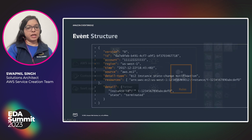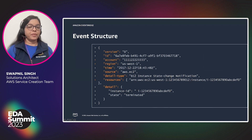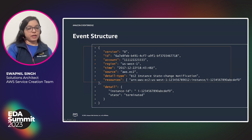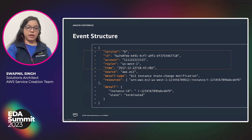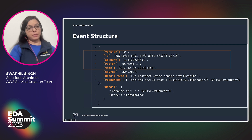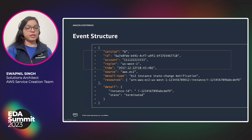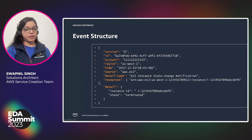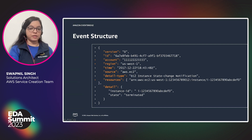Let's look at the event structure. The top part contains the metadata — version, ID, account, region, and time — which is added by the EventBridge service itself; you don't have to send it explicitly. You can send source, detail-type, resources, and detail in your event when creating a custom event.